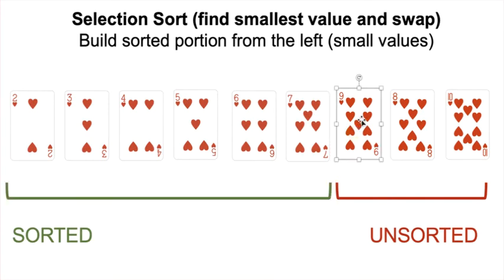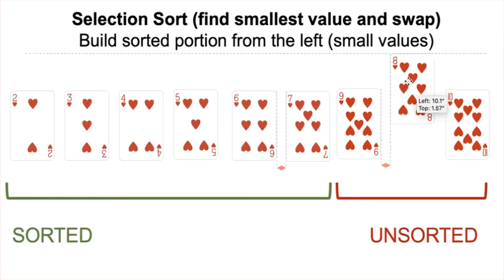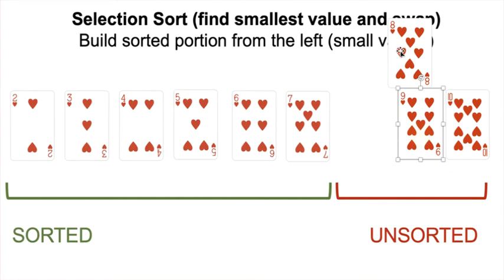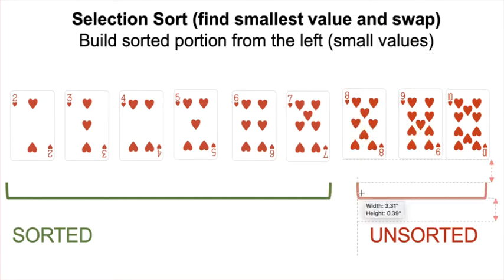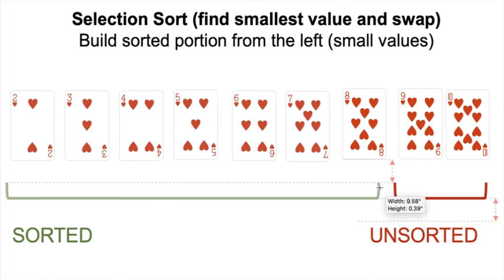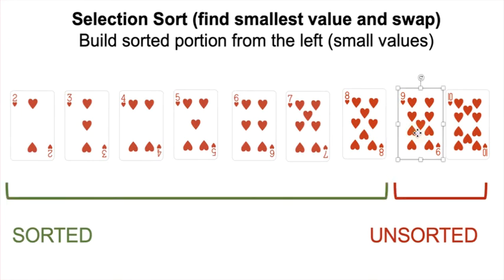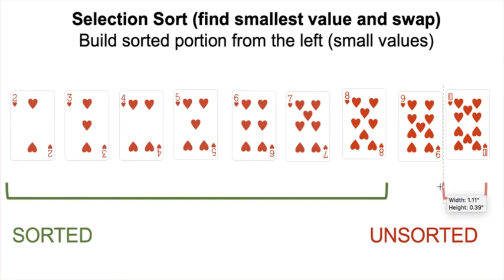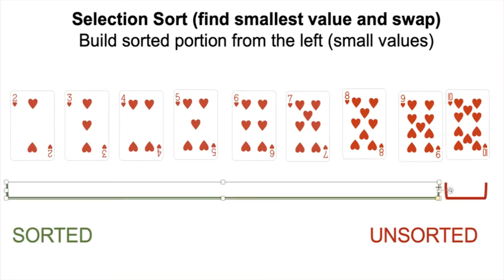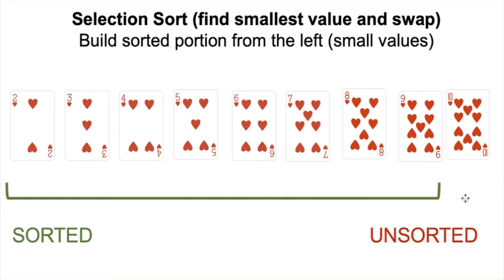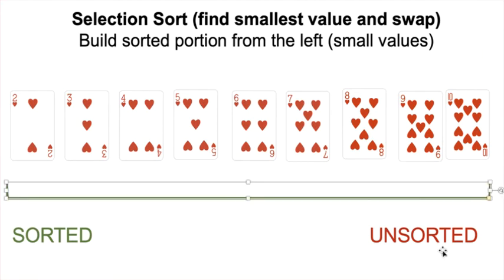9 is our first element in unsorted — assume it's the smallest. 8 smaller than 9? Yes. 10 smaller than 8? No. So we swap the 8 and the 9. Only one more iteration left — 9 is our smallest, and 10 is not smaller than 9, so we swap 9 with itself. The unsorted portion shrinks by 1 and sorted grows by 1. We don't have to check the last element — it has to be the largest. Our array is now completely sorted.